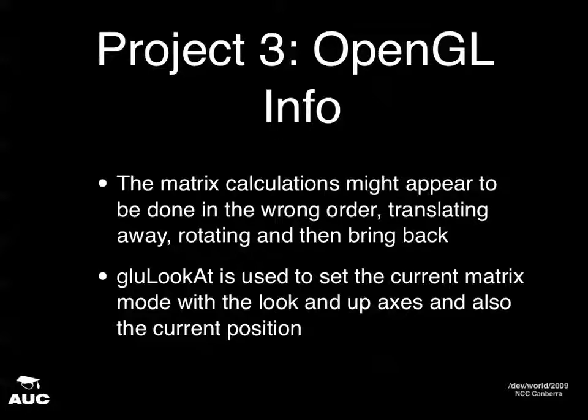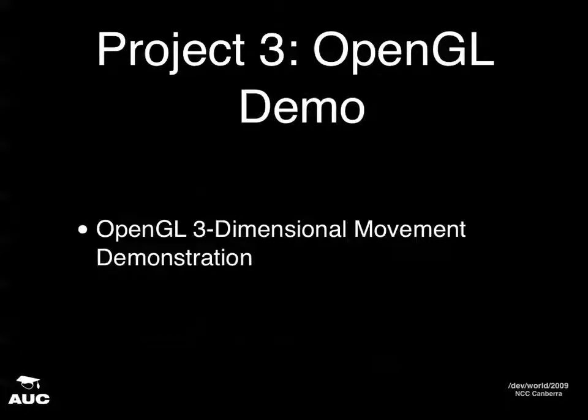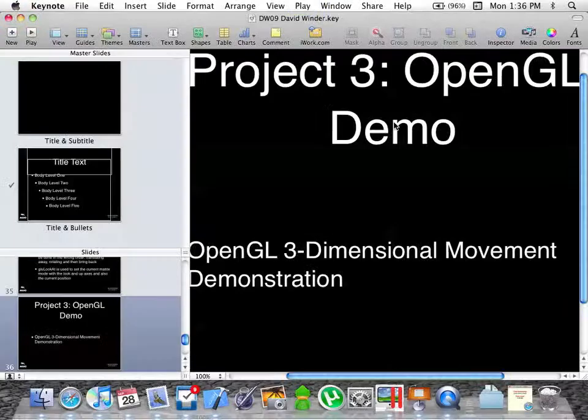The glLookAt function that OpenGL provides is quite handy — you pump in your eye position, your look, and your up axis, and it creates the matrix that sets the current view matrix mode. You do that every time in the render cycle.